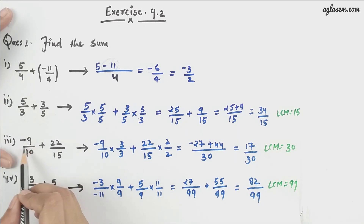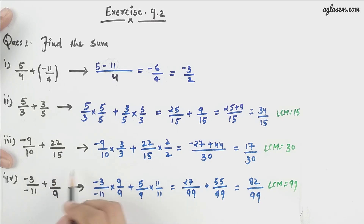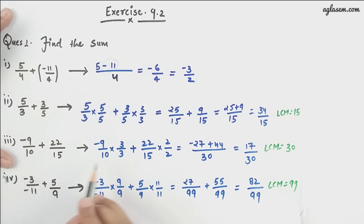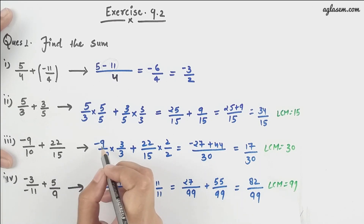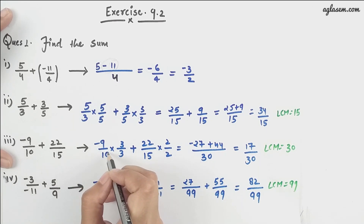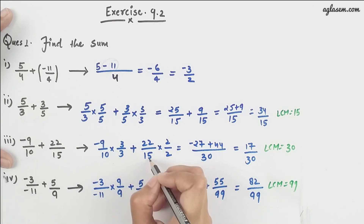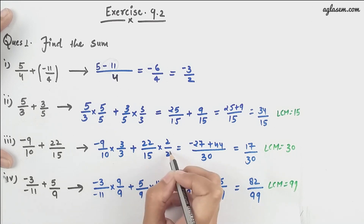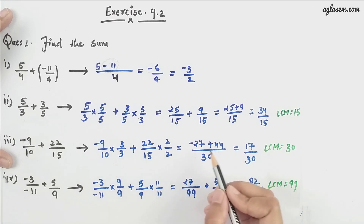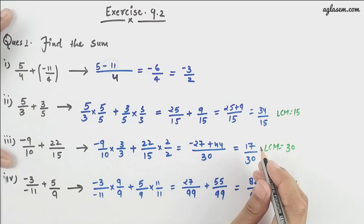Moving further, we have -9/10 plus 22/15. We need to convert to the same denominator. Multiplying -9/10 by 3 and 22/15 by 2 gives us -27/30 plus 44/30, which equals 17/30.